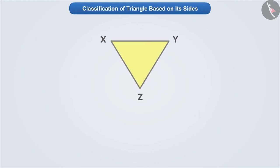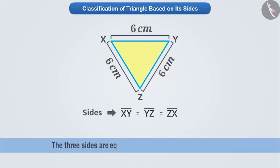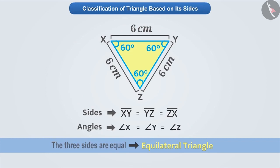Now, look at this triangle. On measuring this triangle, we find that all its three sides are equal. A triangle whose three sides are equal is known as an equilateral triangle. If we measure its angles, we find that all the angles of such a triangle are also equal. That is, all the sides and all the angles of an equilateral triangle are equal.